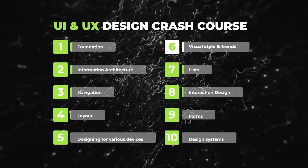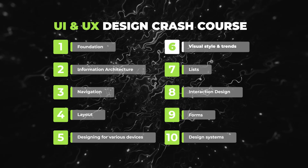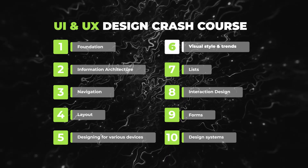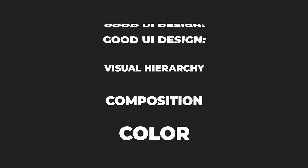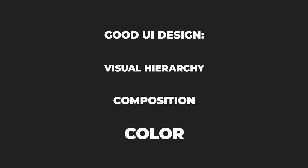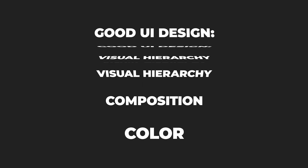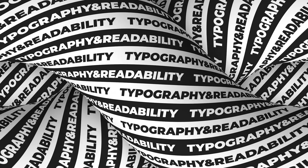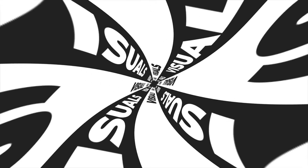We already touched on some parts of good interface design in the previous videos, but in general it consists of visual hierarchy, composition, color, typography with readability, and visuals.